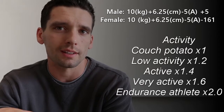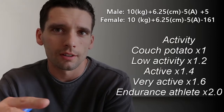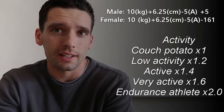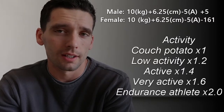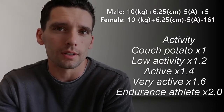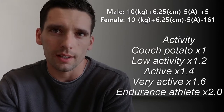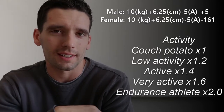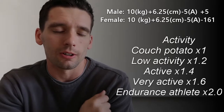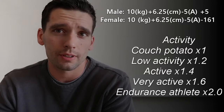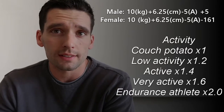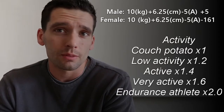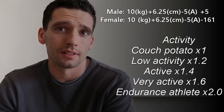People often go by what the treadmill or elliptical tells them — you put your hands on the sensors and it gives you a calorie number. But that doesn't account for your age, height, or weight; it just uses your heart rate. That can't be accurate at all. And if you're guessing — like assuming lifting weights burns a lot of calories — that's probably way off too, because lifting weights doesn't actually burn that many calories.